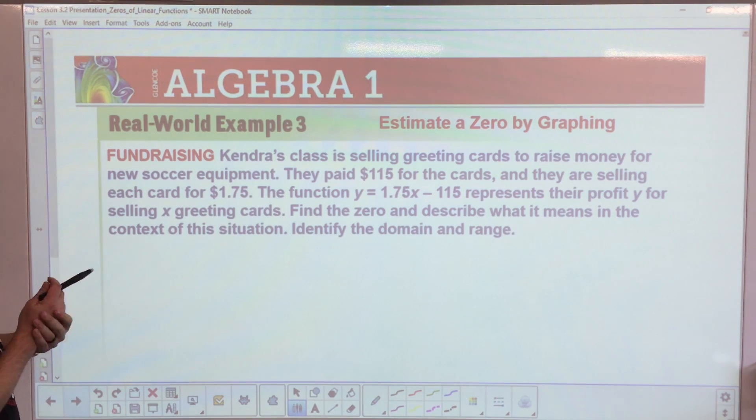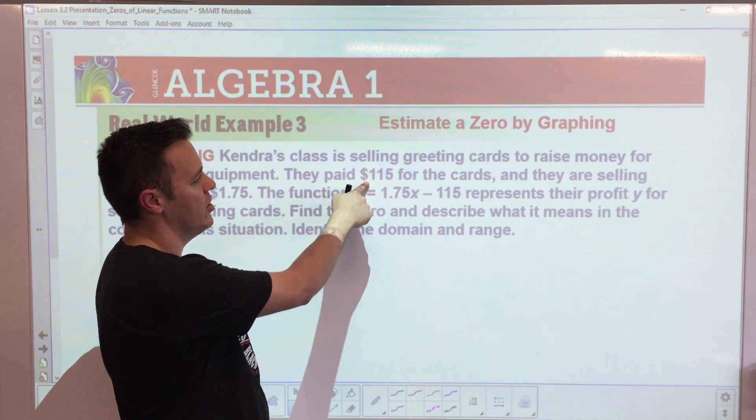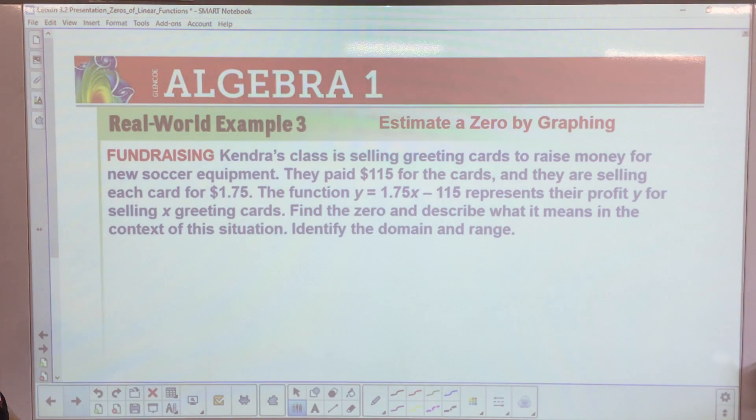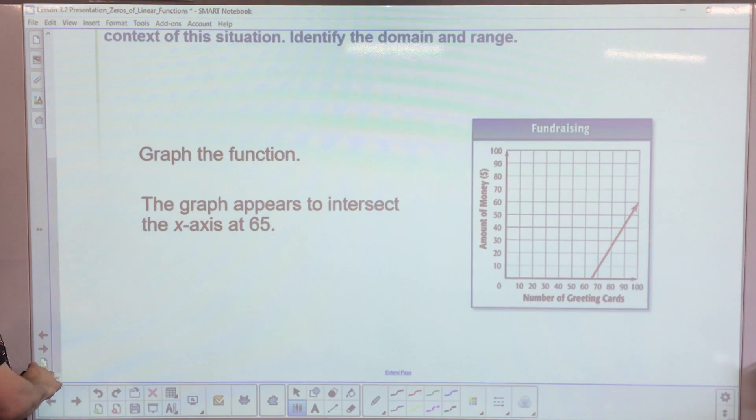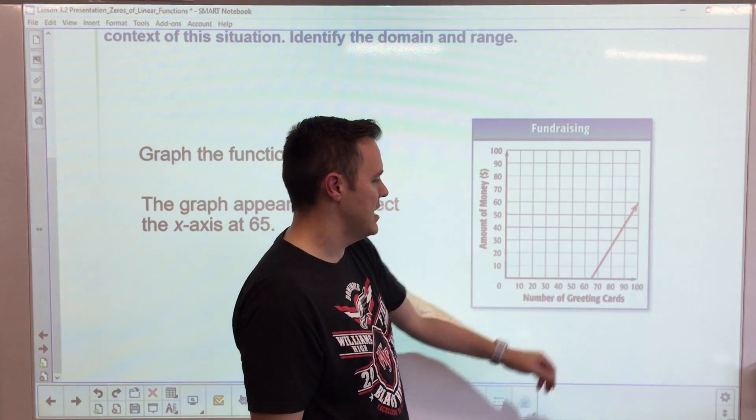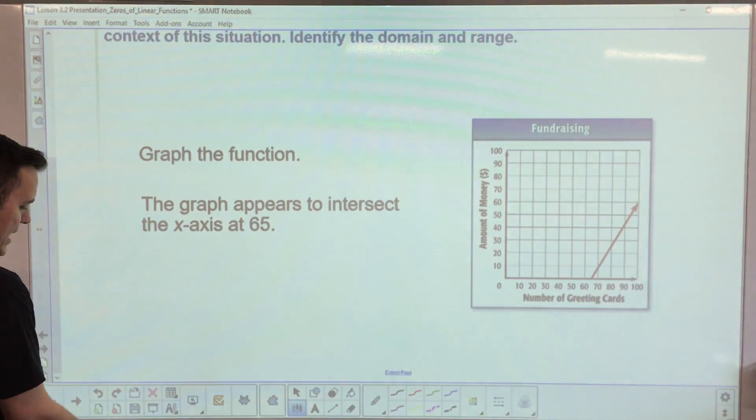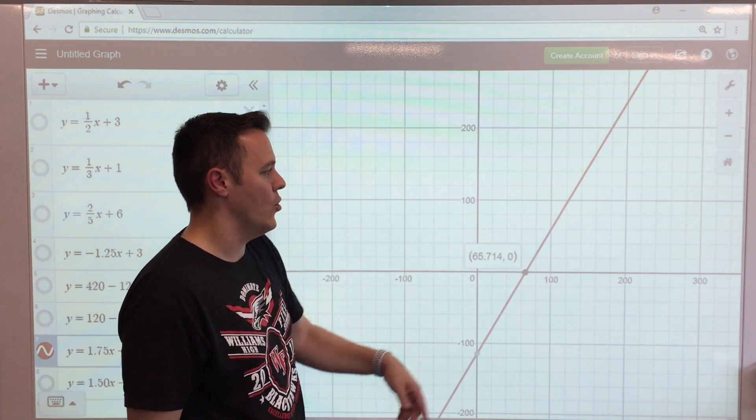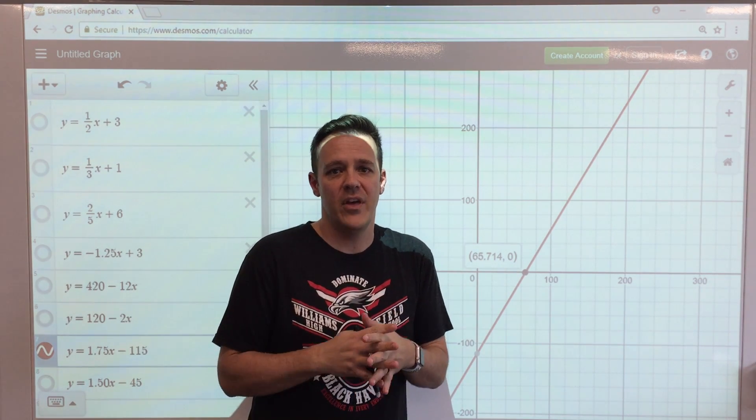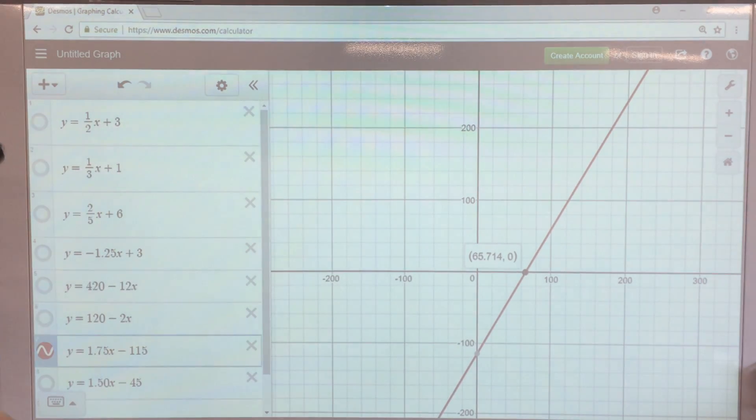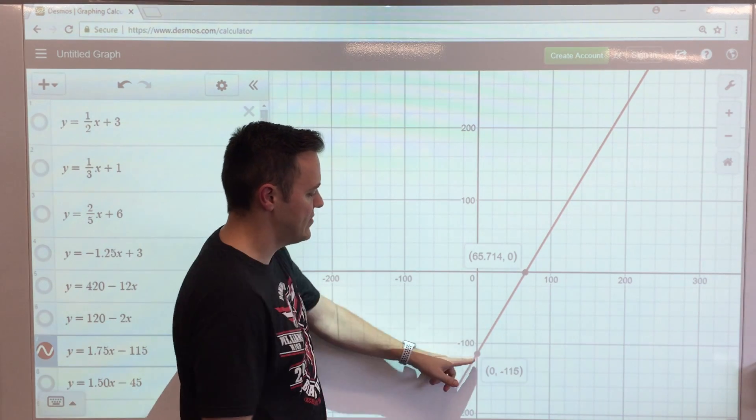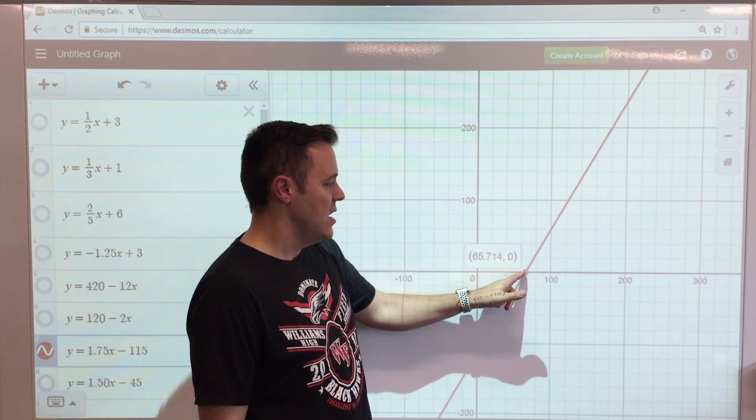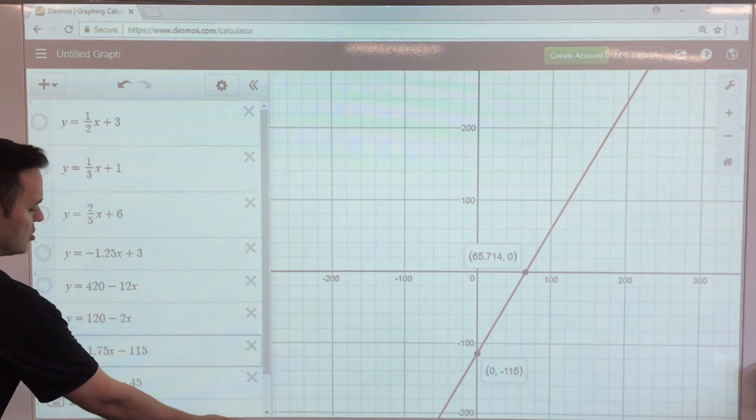Kendra's class is selling greeting cards to raise money. Here's the equation: they paid $115 for the cards and are selling them for $1.75 each. This represents their profit y when they sell x greeting cards. Find the zero, describe what it means, then identify the domain and range. When you graph it, you can see the domain starts at 65.714. What this means is that in order for them to actually make profit, they have to start selling cards. Once they sell 66 cards they have actually broken even, because here's the graph - it starts at negative $115.